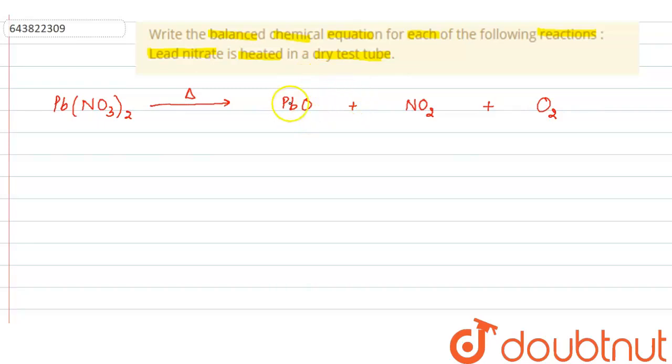So basically, we obtain yellow precipitate of lead oxide here. We get yellow PPT of lead oxide. Then, we get nitrogen dioxide gas and oxygen gas.